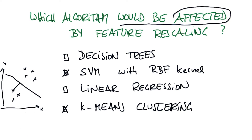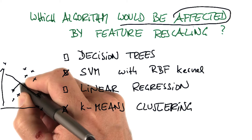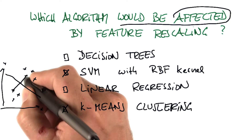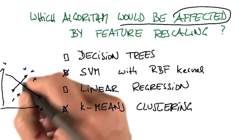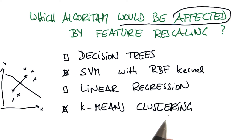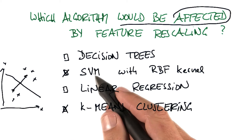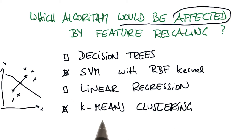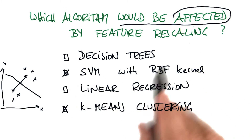The same is true, coincidentally, for k-means clustering, where you have a cluster center and you compute the distance of the cluster center to all the data points. And that distance itself has exactly the same characterization — if you make one variable twice as big, it's going to count for twice as much. So as a result, support vector machines and k-means both are affected by feature rescaling.